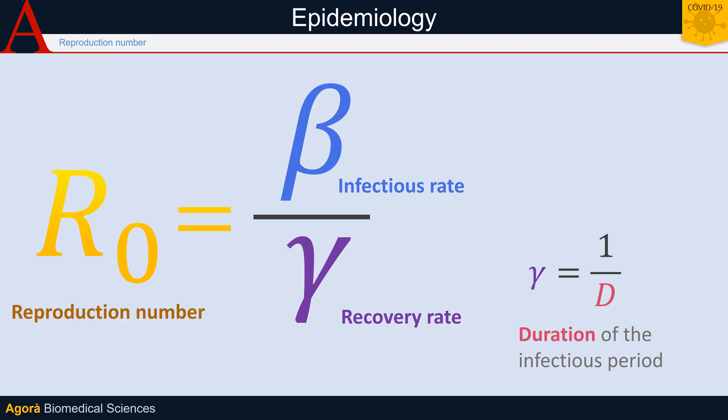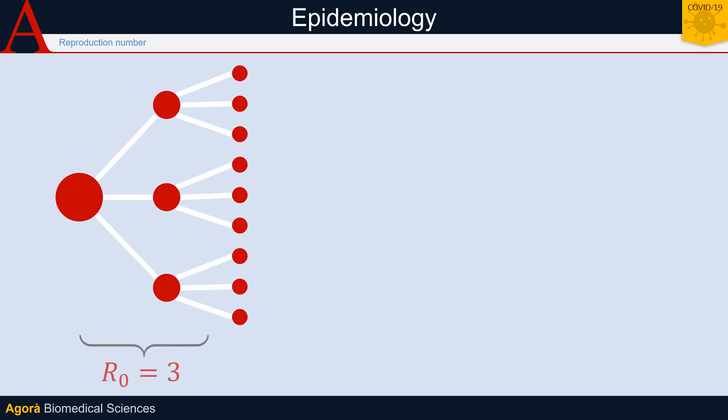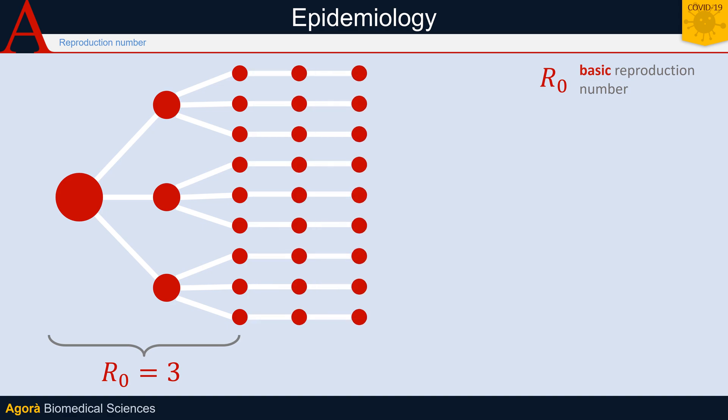Technically, we use the term R₀ only to refer to when the epidemic breaks out — that is to say, when the whole population is still susceptible. But as the epidemic progresses, the number of secondary infections caused by an infected person decreases, because most of the people they come in contact with will already be infected or immunized. The reproduction number therefore varies over time, and for this reason its value is referred to as R_t.